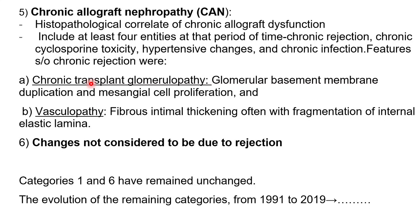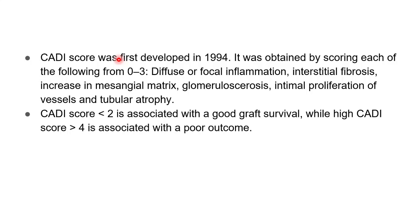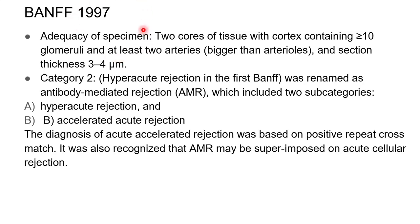I am not going into detail on every category because to cover it entirely might take one to two hours — just giving an overview. Subsequently in 1997, for adequacy of specimen it changed to two cores of tissue containing more than 10 glomeruli and at least two arteries. Hyperacute rejection was renamed as antibody mediated rejection, subclassified into hyperacute and accelerated acute. Just remember: in 1997 the change from 7 to 10 glomeruli was made, and hyperacute was changed to antibody mediated rejection.